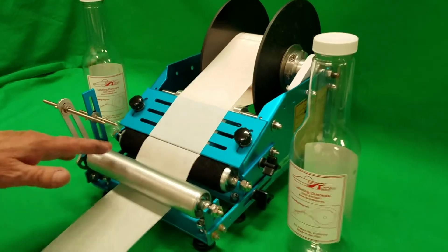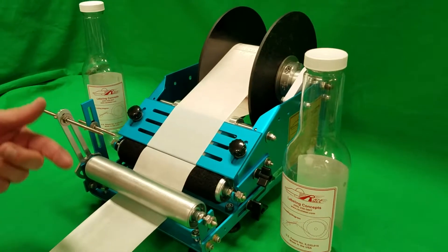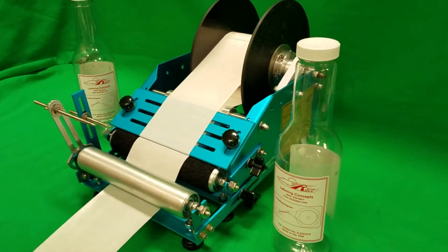That's how front and back label application is done on the junior machine, when labels are alternating front, back, front, back on the same roll.